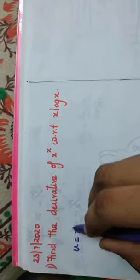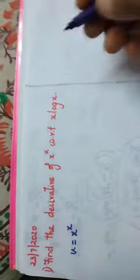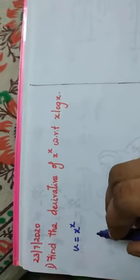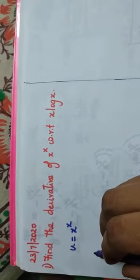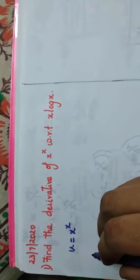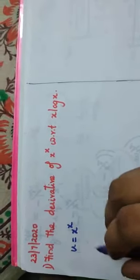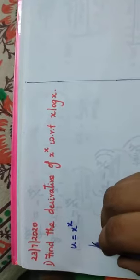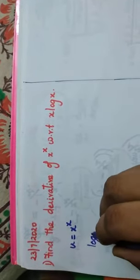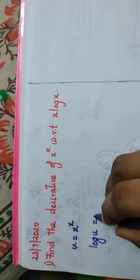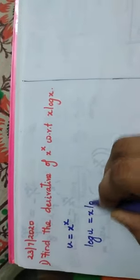Let u = x^x. Taking the logarithm on both sides, log(u) = x·log(x).